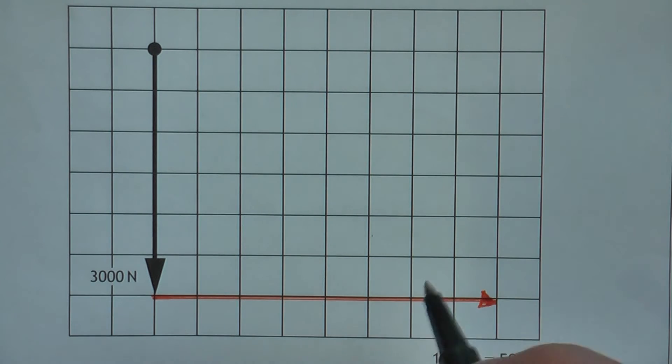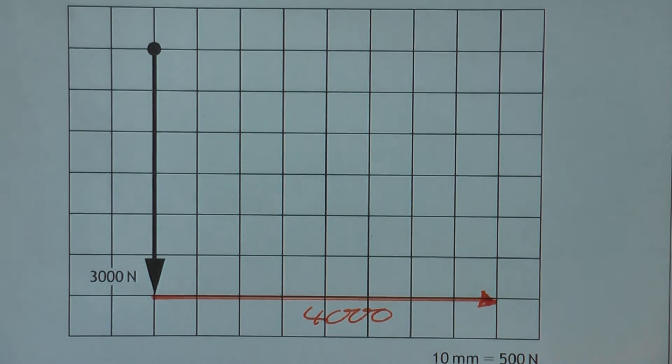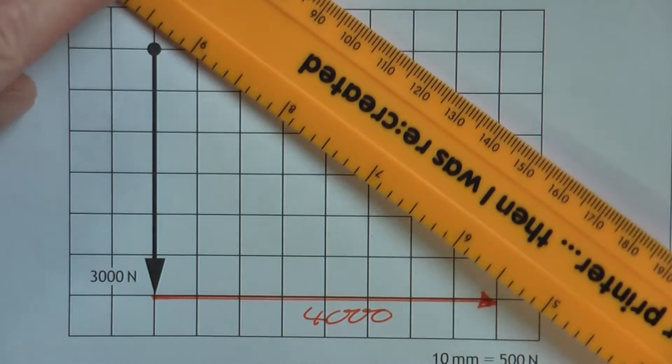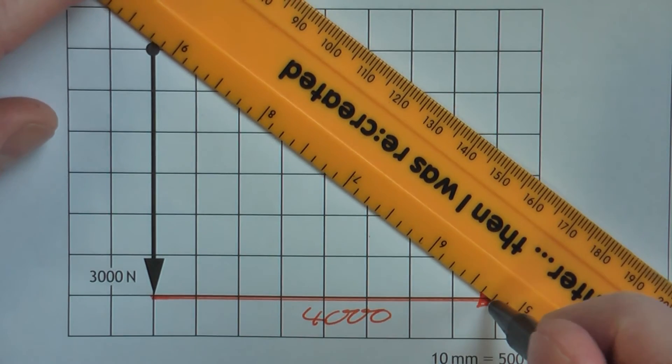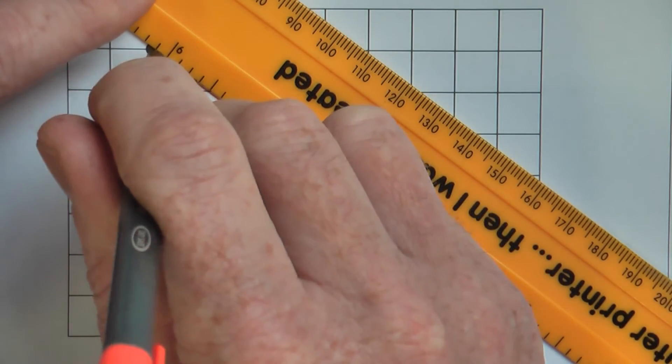So that's the two forces that we know, 3,000 and 4,000. We know that the thing's balanced, so there must be a polygon of forces, in this case a triangle. So then, joins back up.